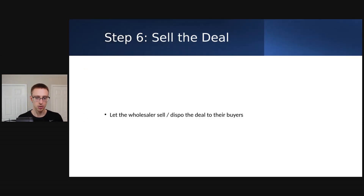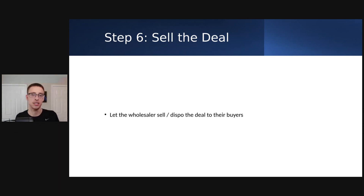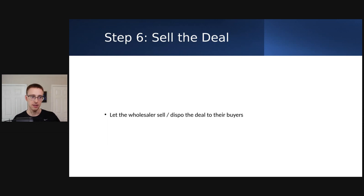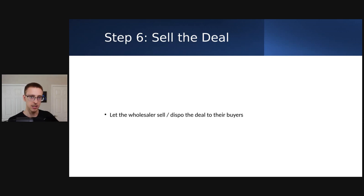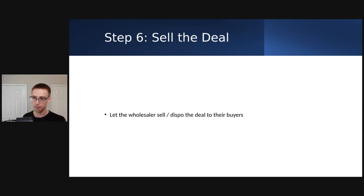Step six: let the wholesaler sell and dispo the deal to their buyers. You already know the criteria their buyers are looking for and you already know they're selling deals, so they'll send it out to their buyers list and do all the work on the disposition side. What I personally would do is let the wholesaler handle disposition, then go back and start looking for more listings that match the buyer's criteria. You're finding a listing, looping in the wholesaler, letting them dispo it — and repeating that cycle. You're literally not spending a single dollar, except for maybe your phone bill.